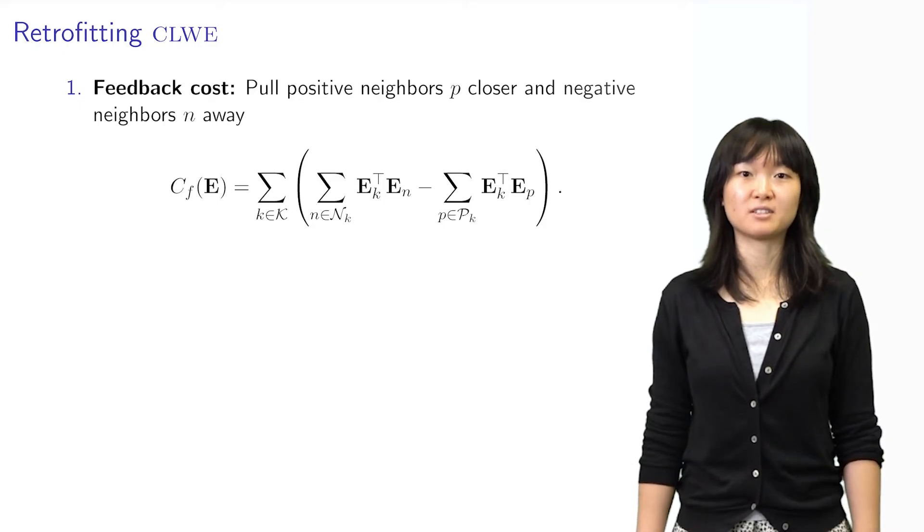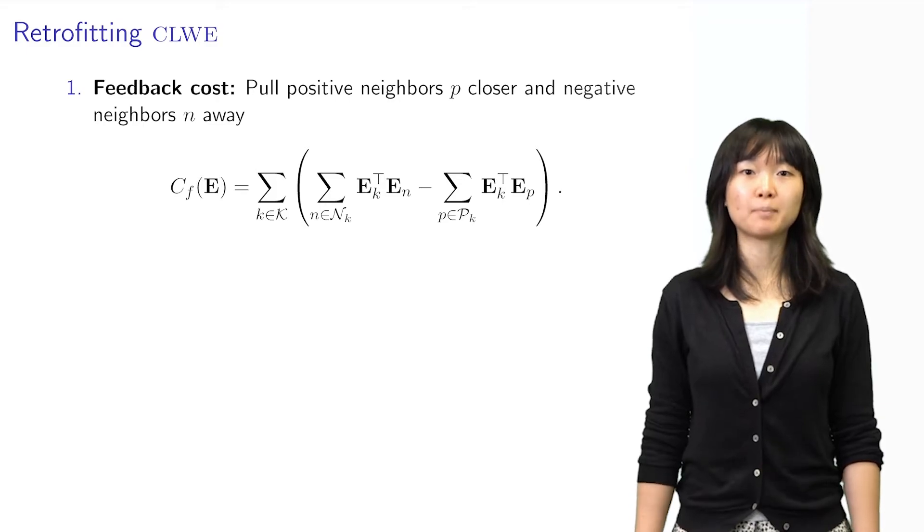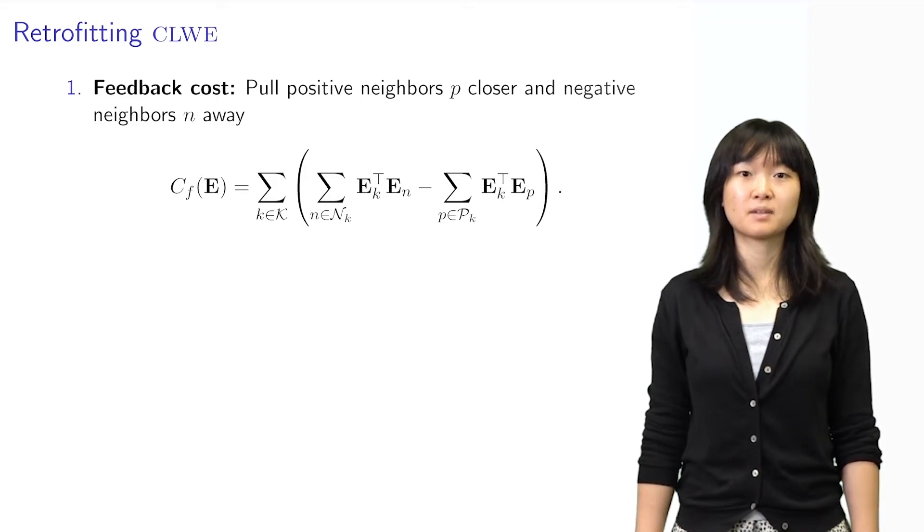After obtaining feedback from the user, we use our annotations to update E, the set of embeddings. Our algorithm adapts Attract-Repel, one of the methods for retrofitting word embeddings.